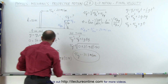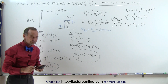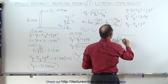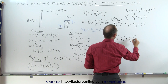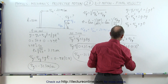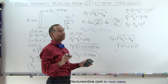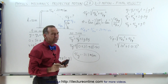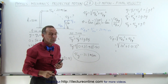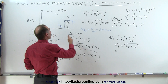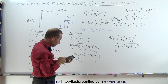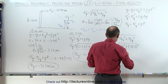Both methods give the same result. Finally, we find v_final: v_final = √(v_final_x² + v_final_y²) = √(20² + (−31.3)²) = √(400 + 980) = √1380 ≈ 37.1 meters per second. This is a positive quantity because it represents the magnitude of the final velocity — the direction will be expressed separately as an angle.